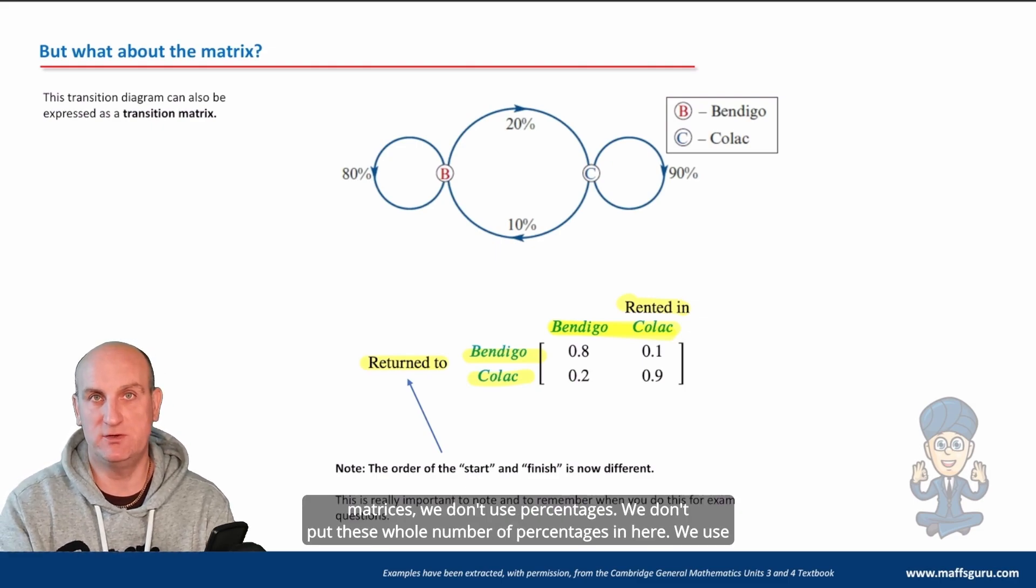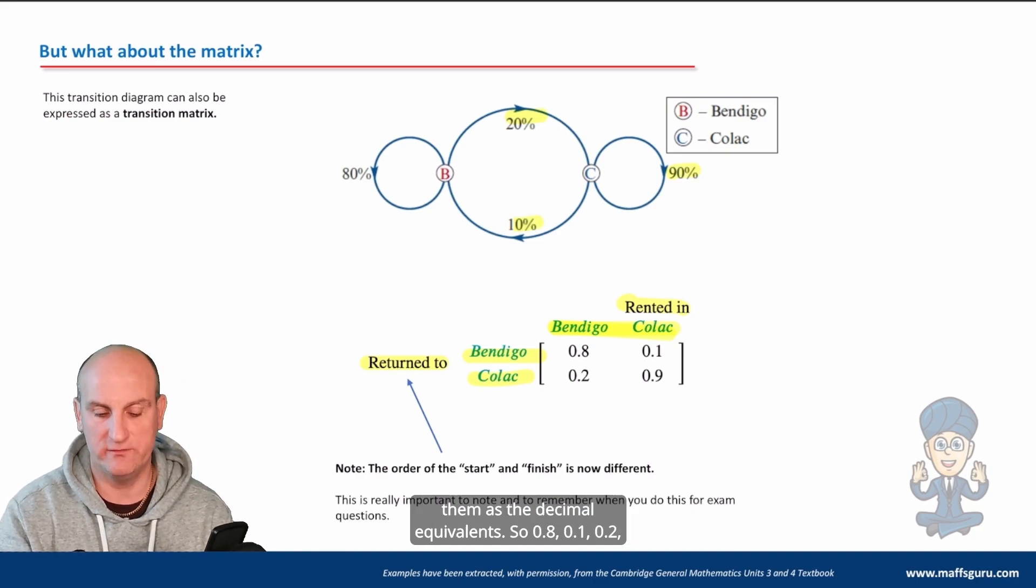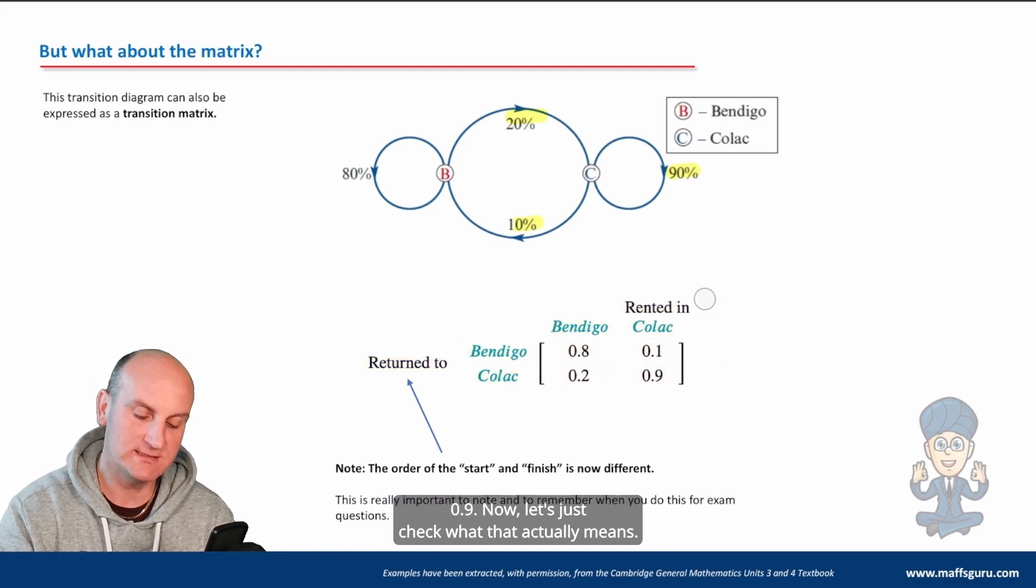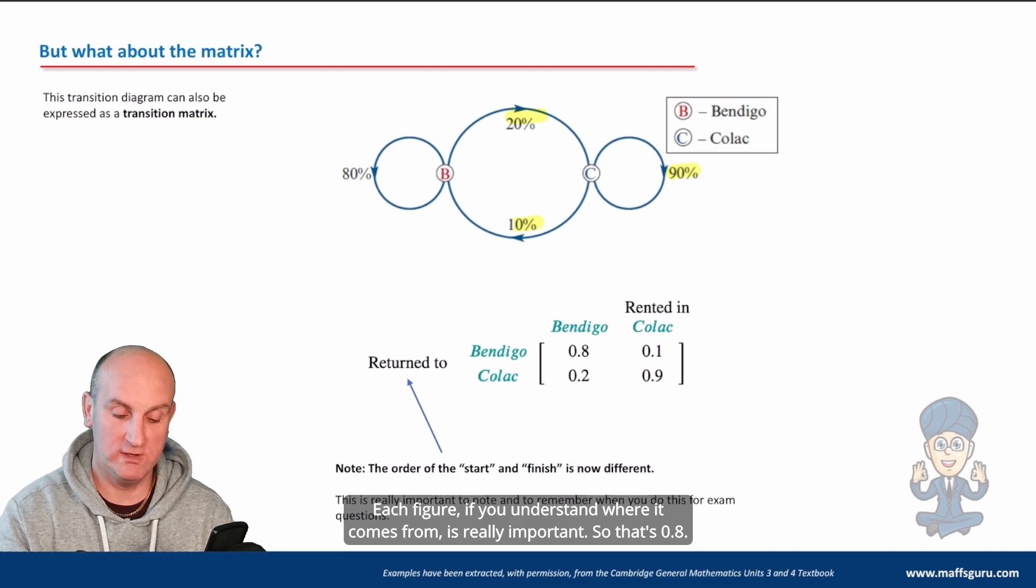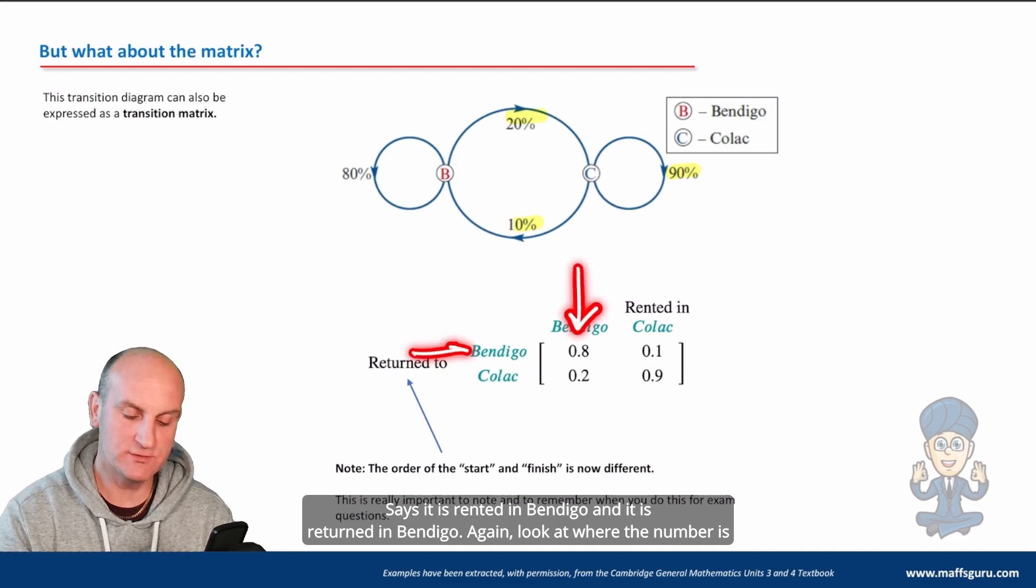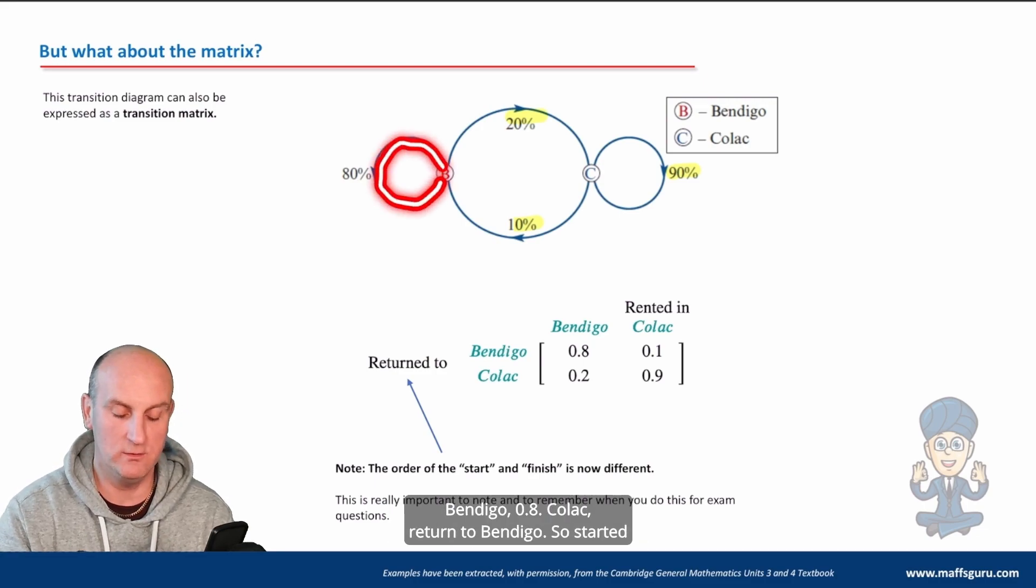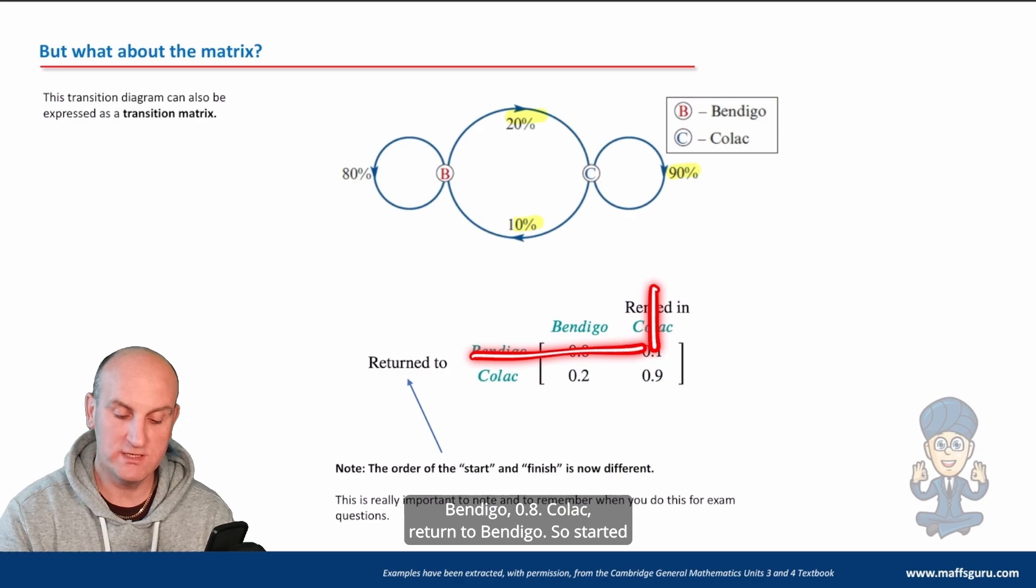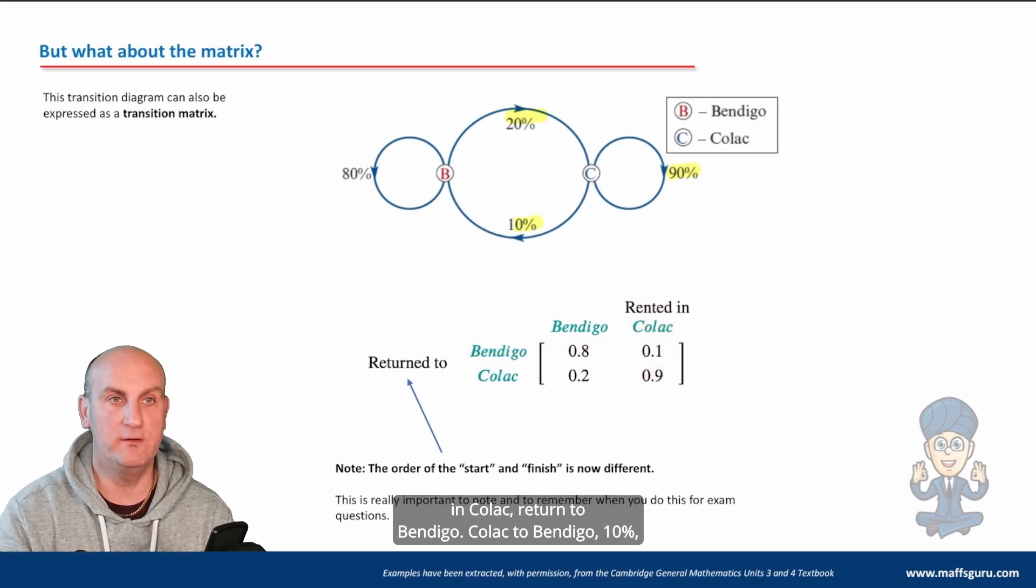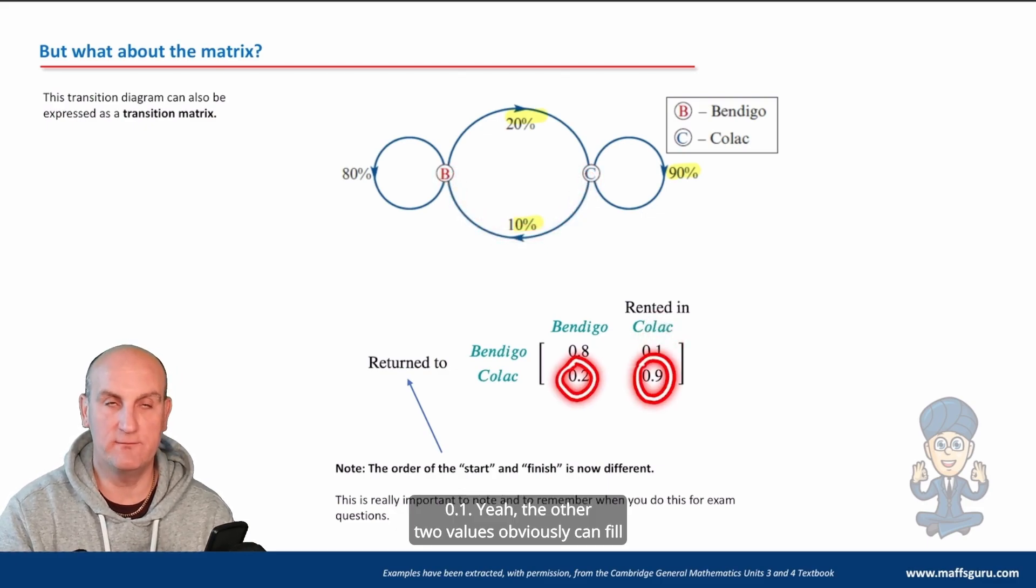Now, when we do the transition matrices, we don't use percentages. We don't put these whole number of percentages in here. We use them as the decimal equivalents. So 0.8, 0.1, 0.2, 0.9. Now, let's just check what that actually means. Each figure, if you understand where it comes from, is really important. So that 0.8 says it is rented in Bendigo and it is returned in Bendigo. Again, look at where the number is situated. It's in the Bendigo column, the Bendigo row. So it started and finished in Bendigo, 0.8. Why? Because that's what happened here. Bendigo to Bendigo, 0.8. Colac, return to Bendigo. So started in Colac, return to Bendigo. Colac to Bendigo, 10%, 0.1. The other two values obviously can fill in from there.